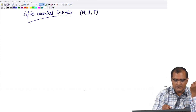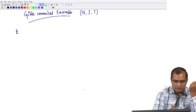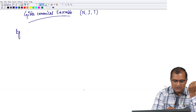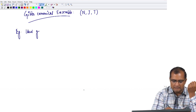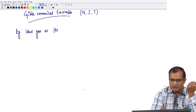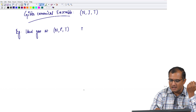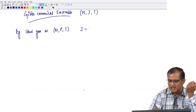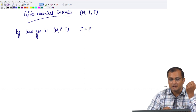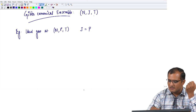Examples of such a system are an ideal gas at some constant values of N, P, and T. I have taken the generalized force as pressure P. So J is the generalized force.